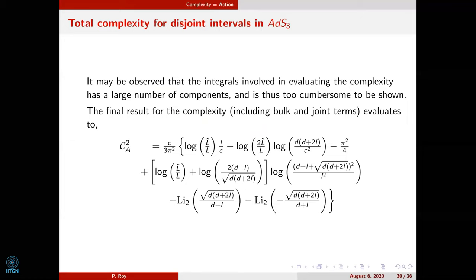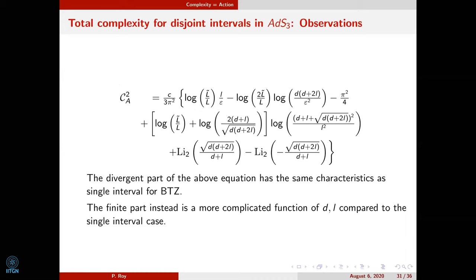Following one regularization, the integrals comprising the complexity evaluation are seven cumbersome integrals. The final result C2A has a divergent part with the same characteristics as the single-interval BTZ case, but the finite part can no longer be written simply in terms of entanglement entropy. That elegant structure is lost.